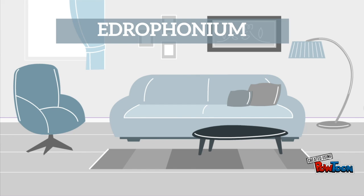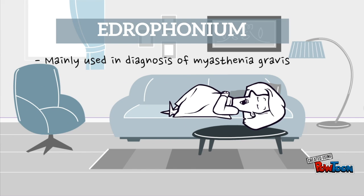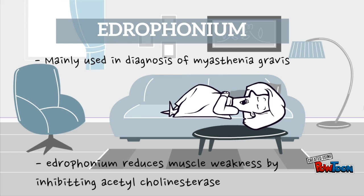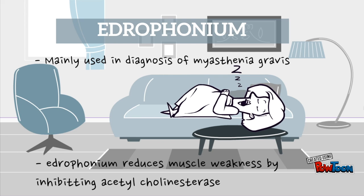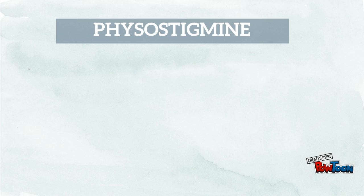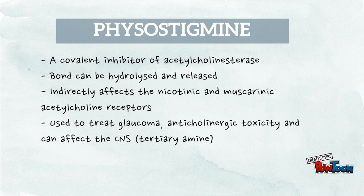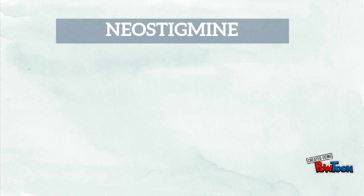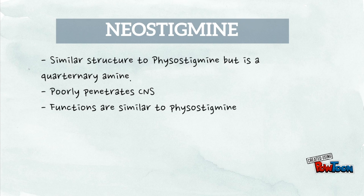Edrophonium is mainly used in the diagnosis of myasthenia gravis because it reduces muscle weakness by inhibiting acetylcholinesterase. Physostigmine is a covalent inhibitor of acetylcholinesterase. Neostigmine has a similar structure to physostigmine, but it is a quaternary amine.